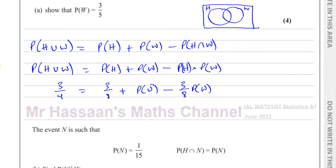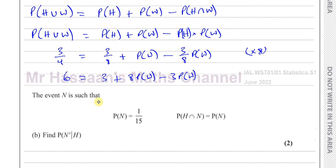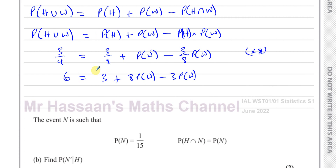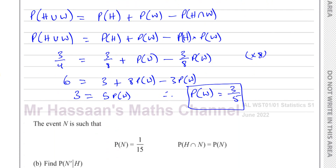I'll multiply everything by 8 to clear the fractions: 6 equals 3 plus 8 times P(W) minus 3 times P(W). Subtracting 3 from both sides gives 3 equals 5 times P(W). Therefore, the probability of W equals 3 over 5 — three fifths. That's exactly what we had to show. So there's part A done.